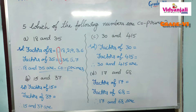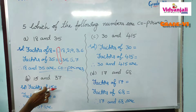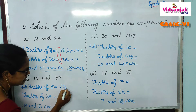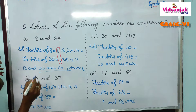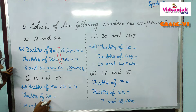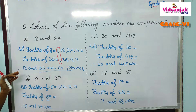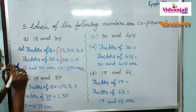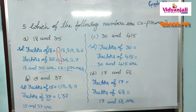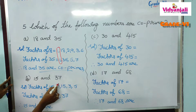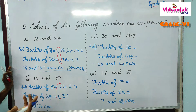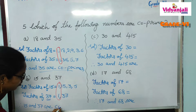Next pair: 15 and 37. Factors of 15 are 1, 3, 5, and 15. Now, 37 is a prime number. We know a prime number has only two factors: 1 and itself. So factors of 37 are 1 and 37. The only common factor for 15 and 37 is 1. Therefore, 15 and 37 are co-primes.